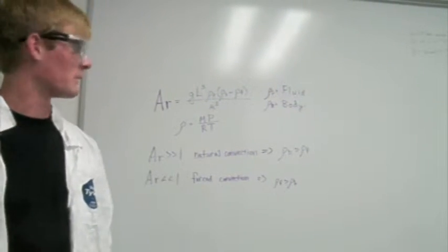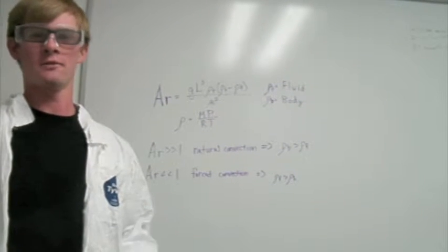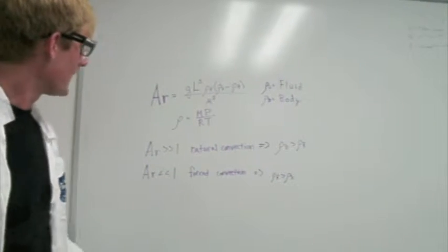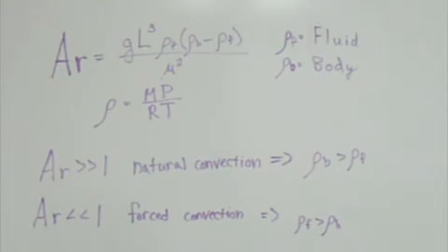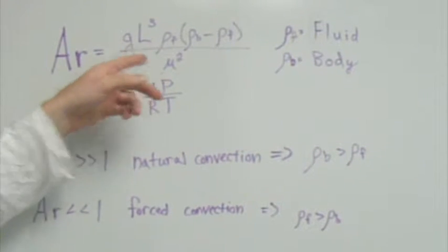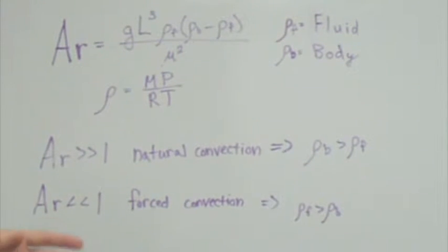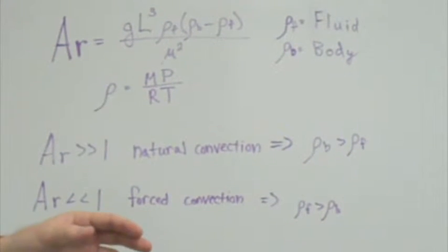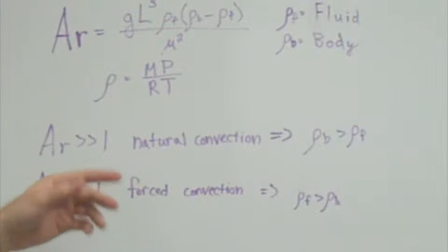What should we do? Alright, so we're going to be talking a little bit about Archimedes' number. Archimedes' number essentially describes the motion of fluids due to differences in their densities. Here we're going to have the gravitational constant times the length of the body cubed times the density of the fluid, multiplied by the difference between the body's density and the fluid density, divided by the viscosity squared of the fluid.